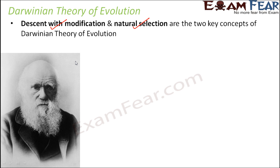Let us understand what we mean by descent with modification. Descent is related to the word descendant — something coming in the next generation. So every generation comes with some modification. And when we say natural selection, it means nature has the power to select or deselect. Nature can accept or reject changes — if changes are for good, nature will support them; if not, they will be discarded and become extinct.